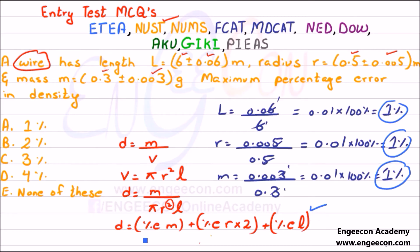Putting these values into the general equation, we get error in mass is 1% plus error in radius 1% multiplied by 2, plus error in length 1%. Adding them, we get 4%. So D is the right answer.